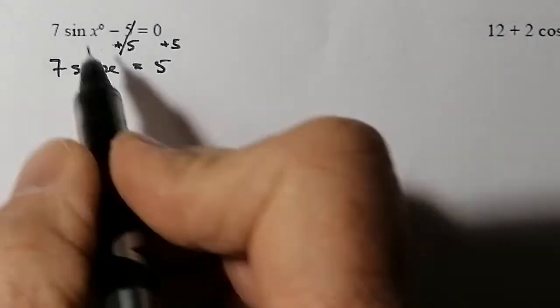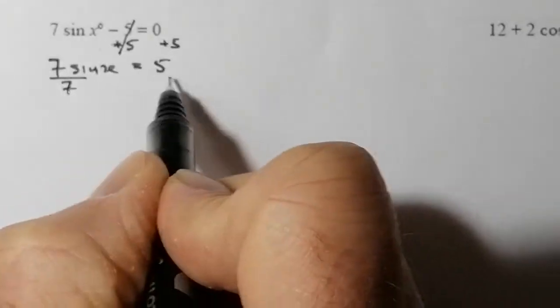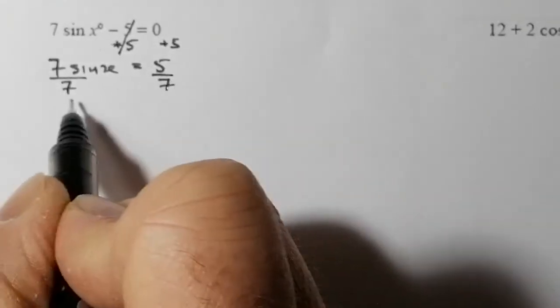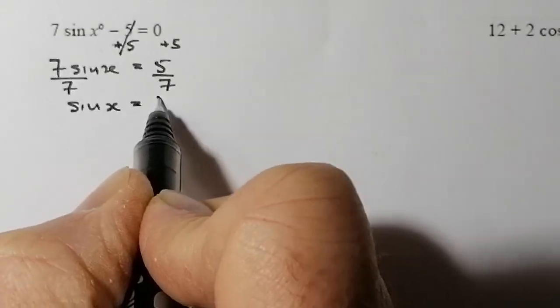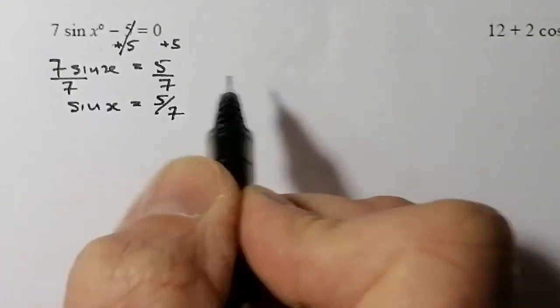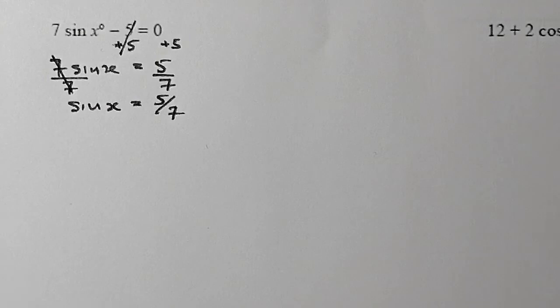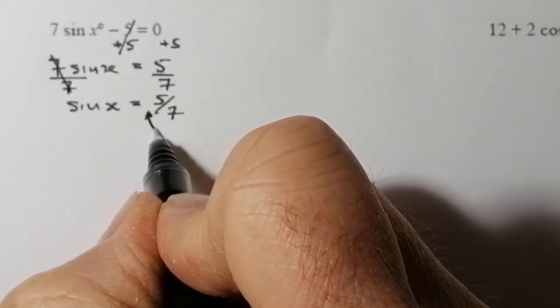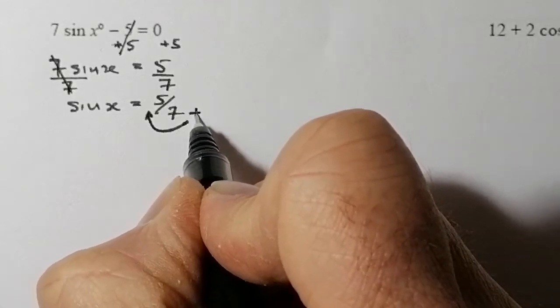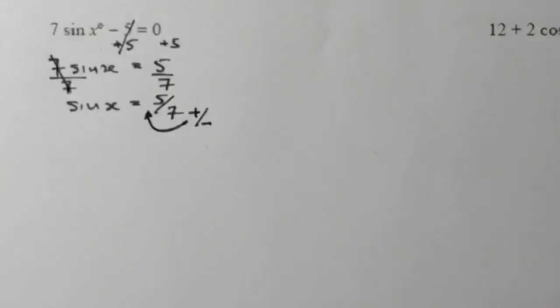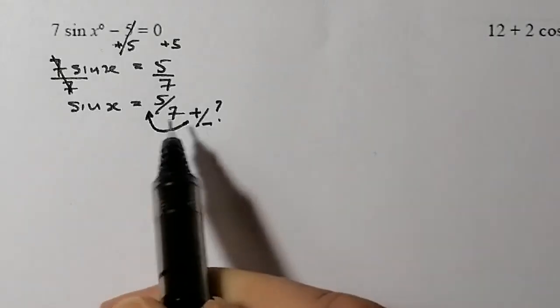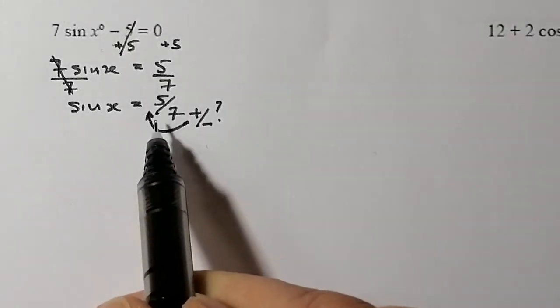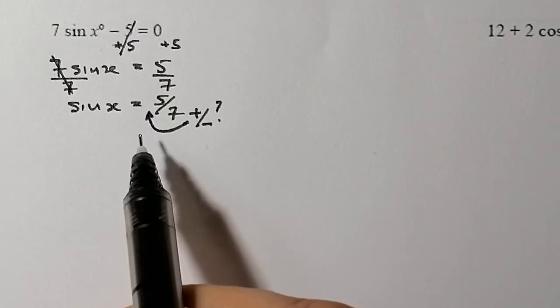Now I don't want 7 sin x, I only want one of them. So I'll divide both sides by 7. That leaves me with sin x = 5/7. That's the setup ready to solve our equation. The first thing I do is ask: is that positive or is it negative? We can see clearly that it's a positive number, positive 5/7.